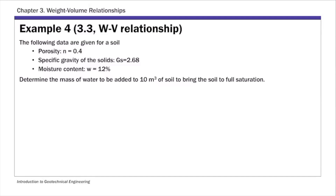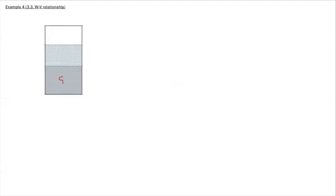This is a weight-volume relationship problem, so we're going to use the phase diagram to solve this problem. I'm going to draw the phase diagram here. Initially the soil is moist, so there are three phases: solid, water, and air. We have these three phases on the phase diagram — that's the initial moist soil — and then we have the weight and volume side.